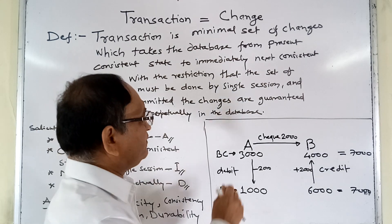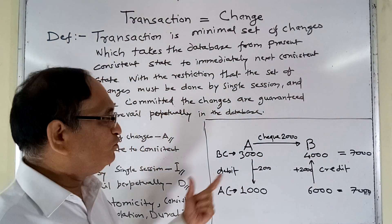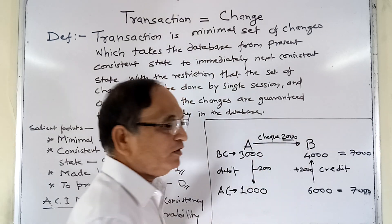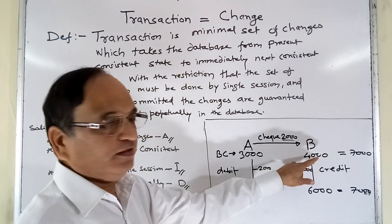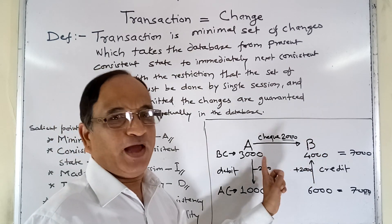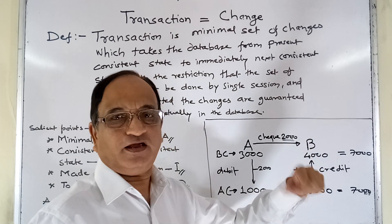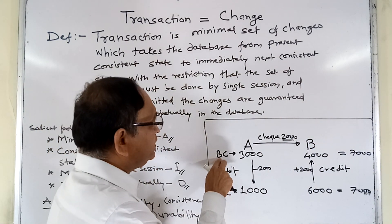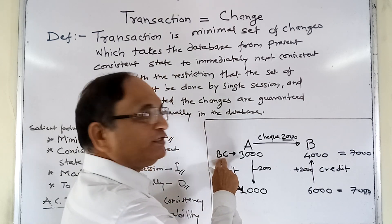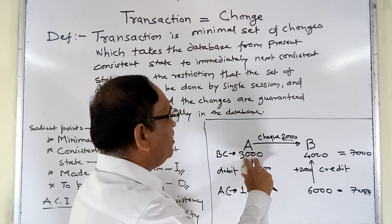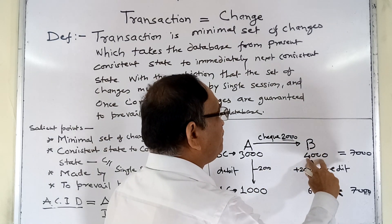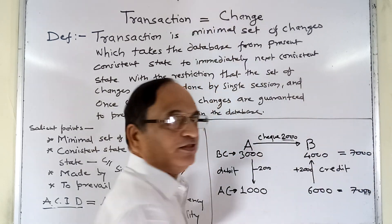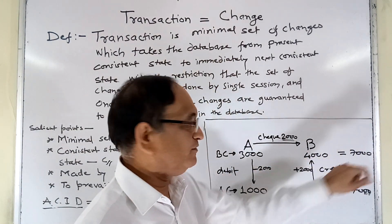Account A issues a check of amount 2000 to B. Since the bank is not issuing any cash, B submits the check to the bank. This is the state of the accounts before the check (BC = before check). Before the check, account A has 3000 and account B has 4000. The sum total of these two accounts is 7000 — that is 3000 plus 4000.